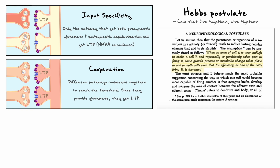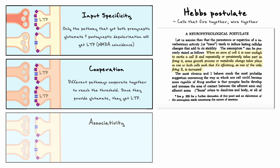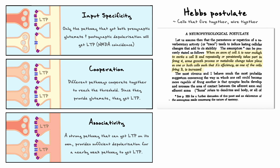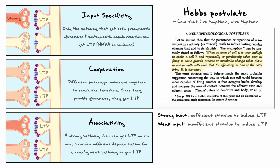Along with cooperativity, another fundamental property of LTP that can occur from multiple pathways interacting is associativity. Associativity occurs in a similar fashion as cooperativity, but an important distinction is that one of the pathways can make the postsynaptic partner fire on its own. The pathway that can make the cell fire on its own is called strong, and the pathway that cannot is called weak. Hence in associativity there is a strong and a weak pathway, while in cooperativity all the pathways are weak. The activity of the strong pathway generates sufficient depolarization for the weak pathway to open its NMDA receptors and subsequently generate LTP there as well.